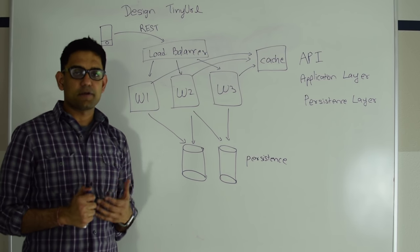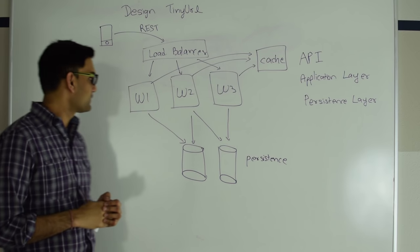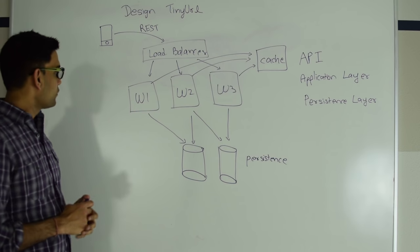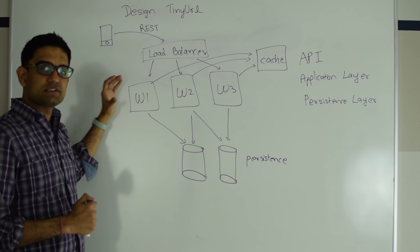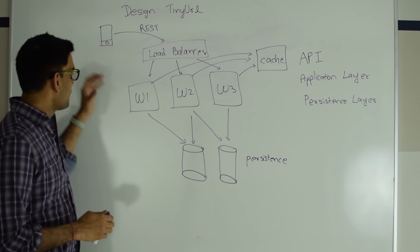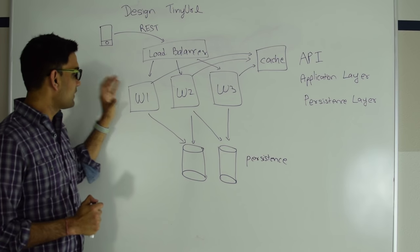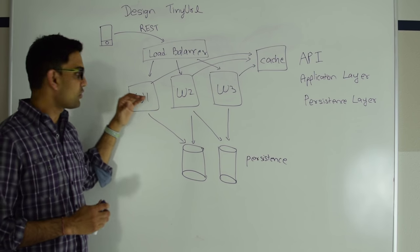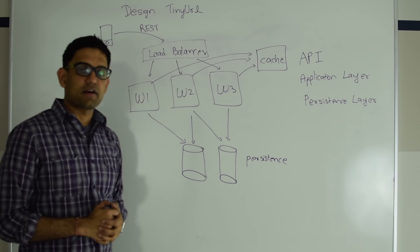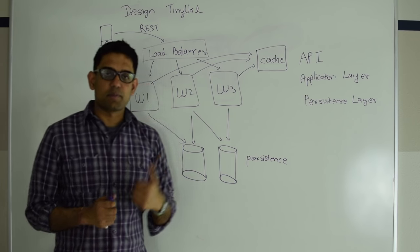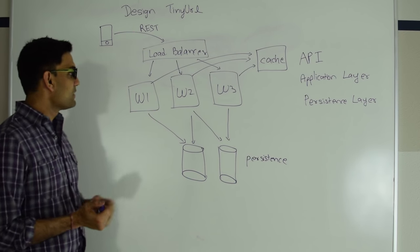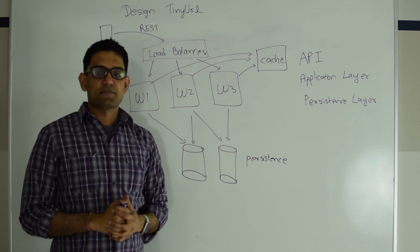Load balancer could also do a bunch of other fancy things — it totally depends on how much money you're willing to pay. These worker threads, or worker hosts, take the URL, generate the tiny URL for it, and store both of them in the persistence layer. When the GET request comes, they get the longer URL for the shorter URL and return it to the client. We'll also have a caching layer which could be Memcache or Redis, and we'll discuss a little bit about them at the end of the video.